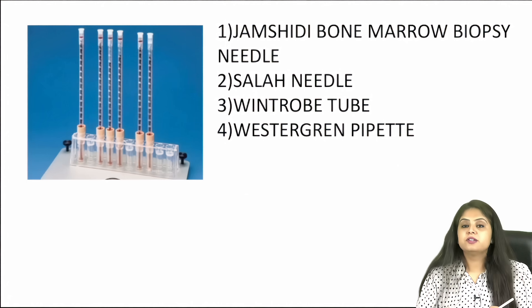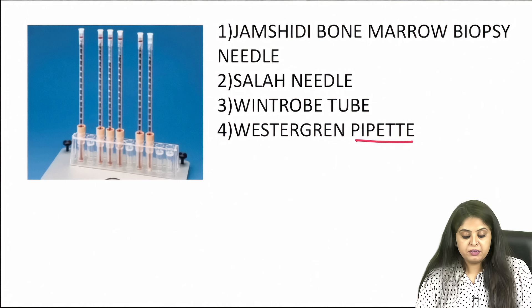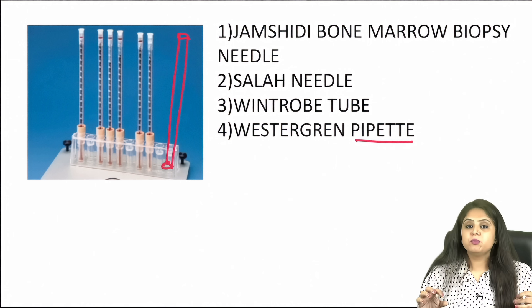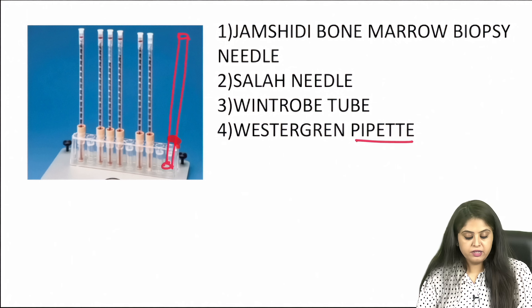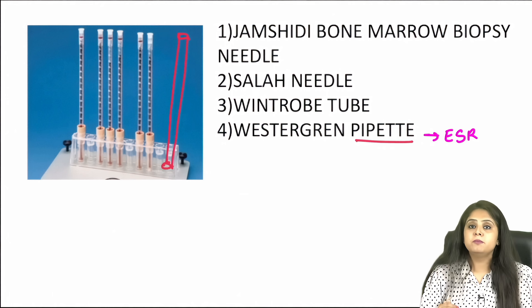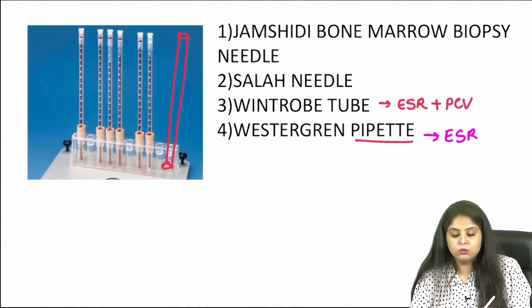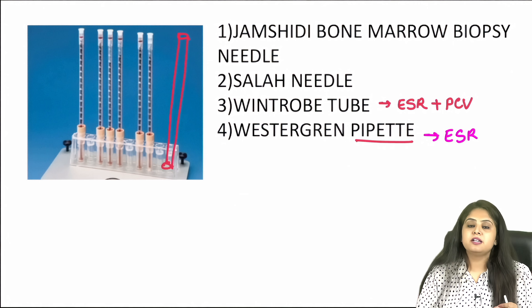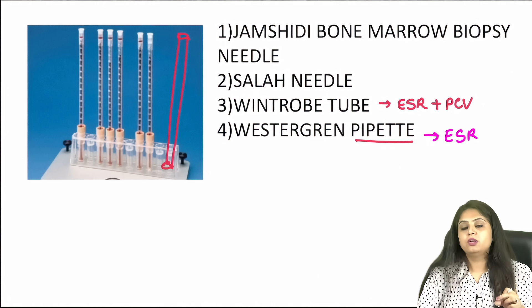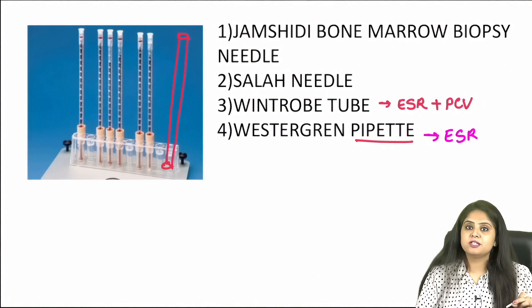The next one is the Westergren pipette — I call it a pipette because it is open from both ends. Since it's open from both ends, you cannot measure packed cell volume. The only thing you can measure is how much the blood column has fallen, i.e., sedimentation — so you can only measure ESR. To repeat: in the Wintrobe tube you can measure both fall and packing, whereas in the Westergren pipette you can only measure ESR.